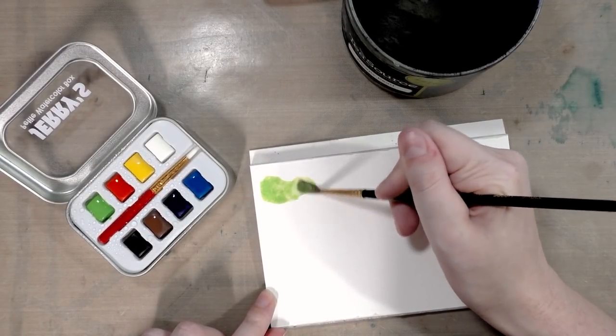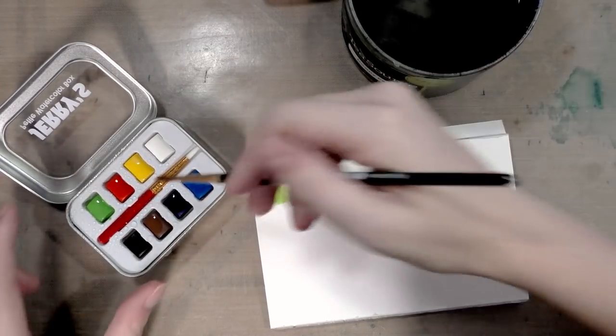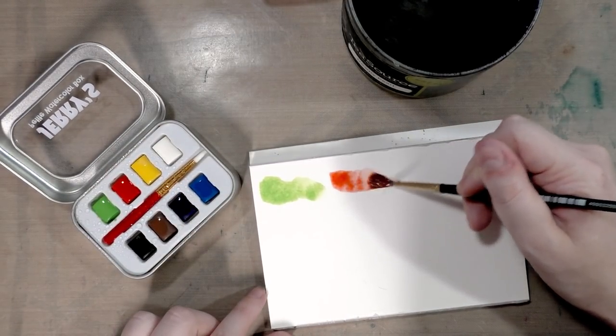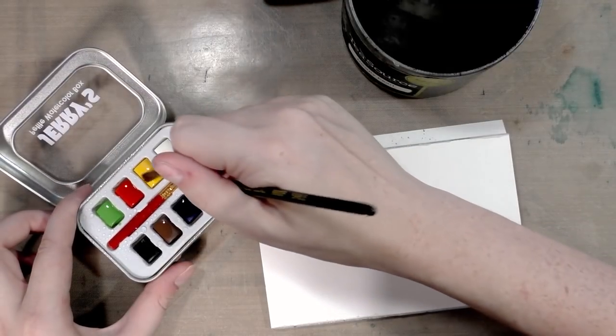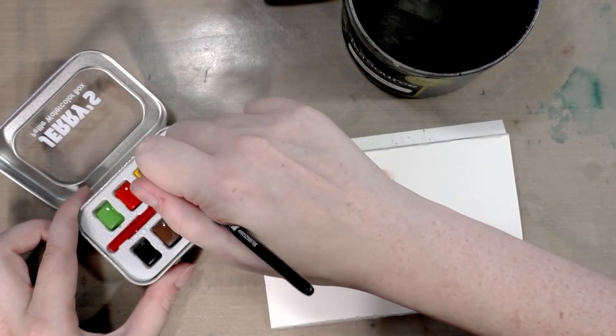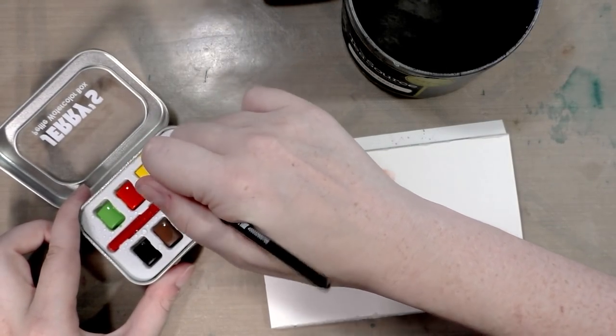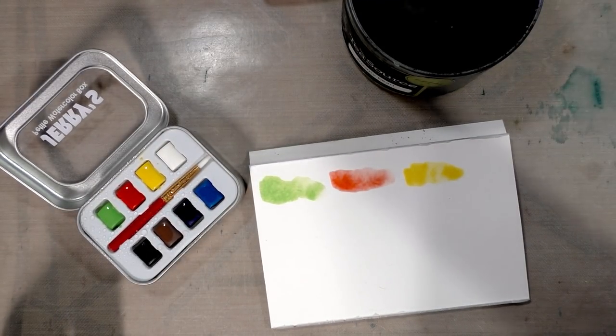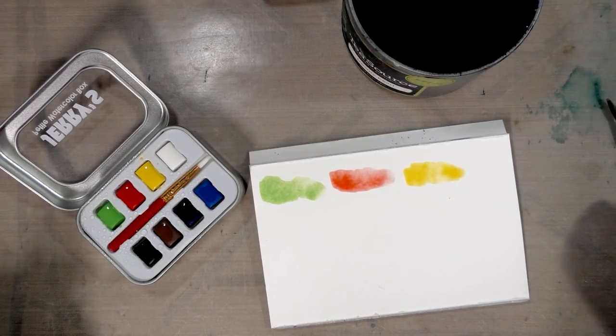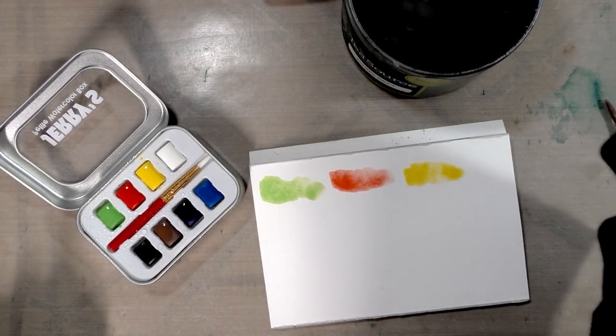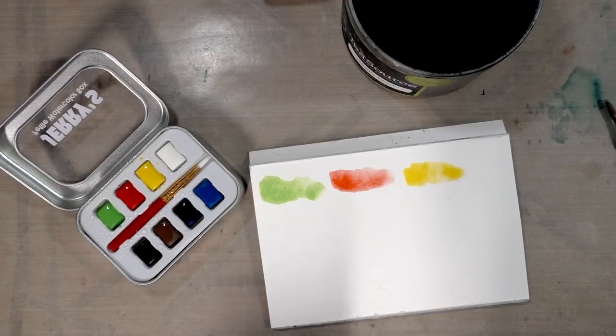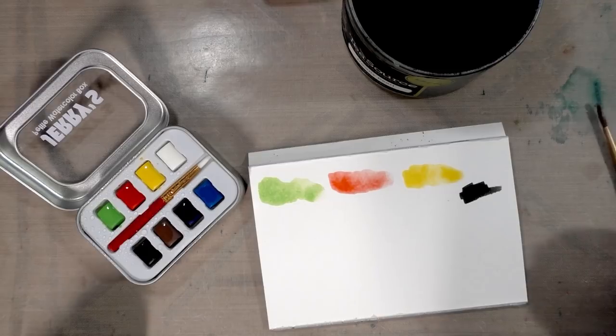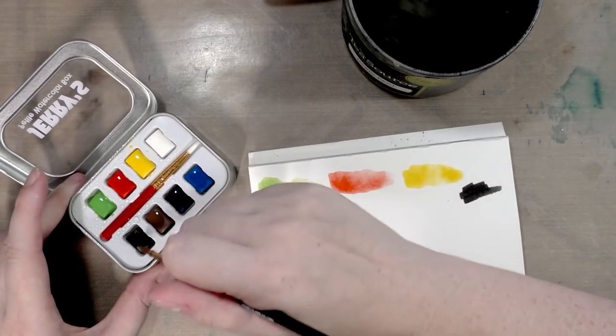So you get like a yellow green. You get a scarlet red. You get a, I want to say like a cadmium yellow hue sort of yellow. You get a Chinese white which I'm going to use a waterproof. We'll let that dry for a few minutes before we attempt to put the white on. We get a black.